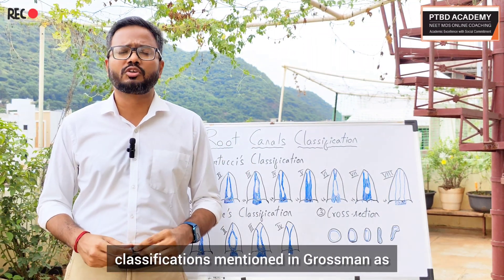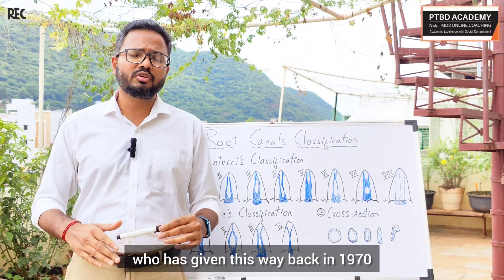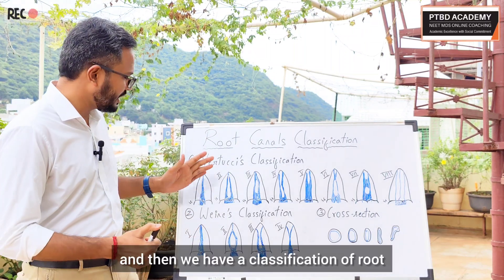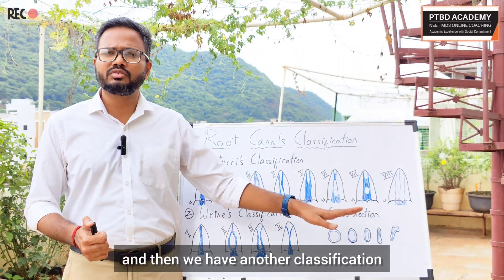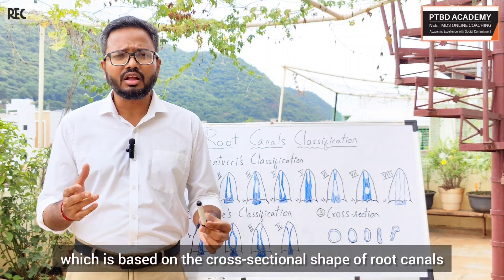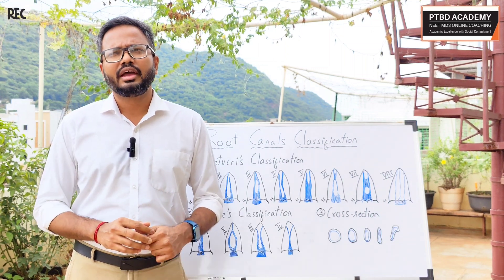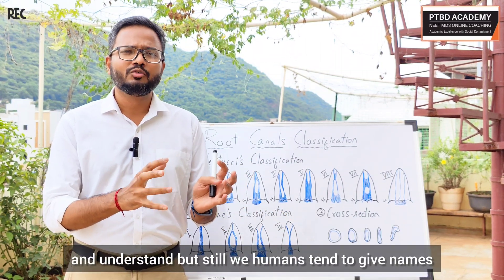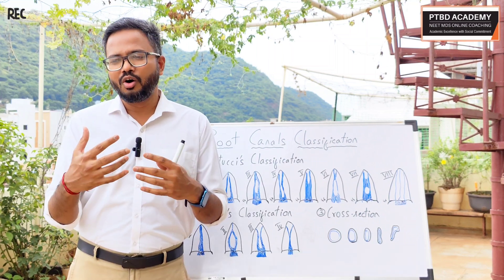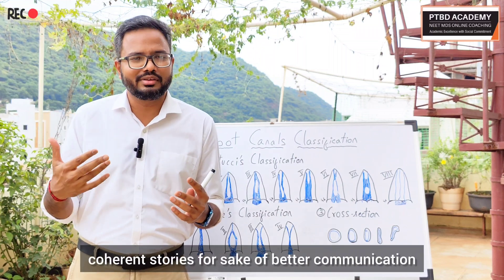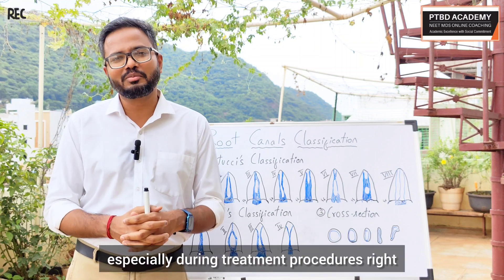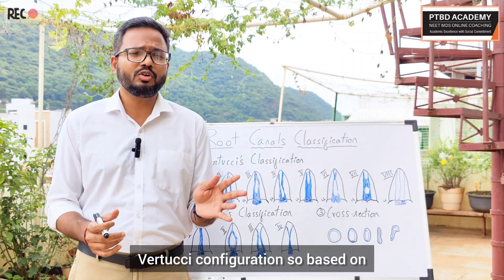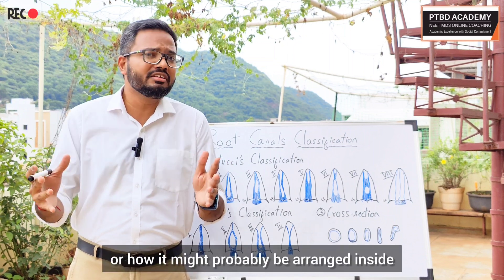In Grossman, we have a classification given by Vertucci, who studied around 200 maxillary premolar specimens — specifically maxillary second premolar specimens — back in 1970. We also have a classification given by Weine, and another classification based on the cross-sectional shape of a root canal. We need these classifications for communication purposes — to give us an impression of how complex root canals are. If I say a particular root canal has a type 4 Vertucci configuration, you'll know how it might be arranged inside the tooth.